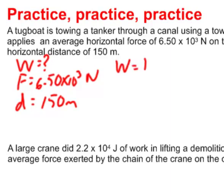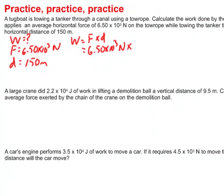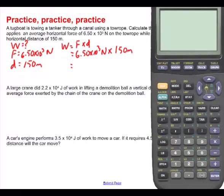Well, the equation was work is equal to force multiplied by distance. So work will be the force, which is 6.50 times 10 to the third Newtons, multiplied by a distance of 150 meters. So what is that? Bring out the calculator. Turn it on. 6.50.